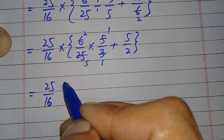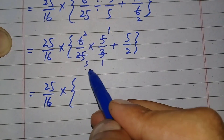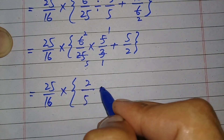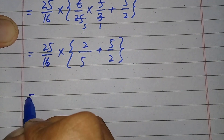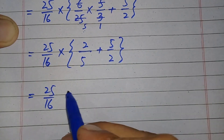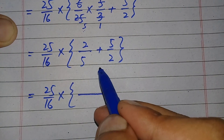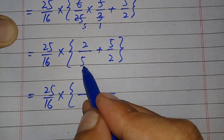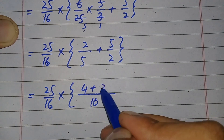Now it is 25 by 16, multiply, braces open. We multiply numerator by numerator and denominator by denominator: 2 times 1 is 2 and 5 times 1 is 5, giving 2 by 5, plus 5 by 2, braces close. In the next step we need to add these two numbers, so we take the LCM of 5 and 2. Since they are prime numbers their LCM is 5 times 2 which is 10. Dividing 10 by 5 gives 2, and 2 times 2 is 4. Dividing 10 by 2 gives 5, and 5 times 5 is 25.